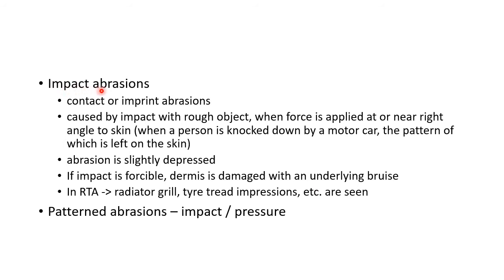Now let us see about impact abrasions. Impact abrasions are also known as contact or imprint abrasions. They are caused by impact with a rough object when force is applied at or near right angle to the skin. For example, when a person is knocked down by a motor car, the pattern of the object is left on the skin. The abrasion is slightly depressed in case of impact abrasion. If the impact is forcible, the dermis is damaged with an underlying bruise. In road traffic accidents, radiator grille and tyre tread impressions are examples of impact abrasions.